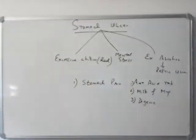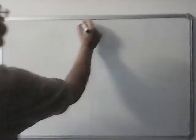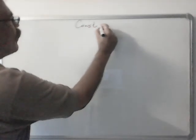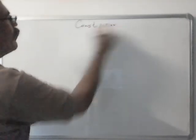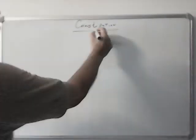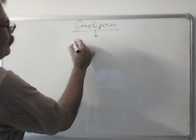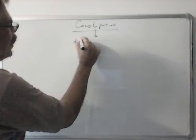So this is about Stomach Ulcer. Now we will do another topic about Constipation. Constipation Definition is Difficulty in Passing Stool.